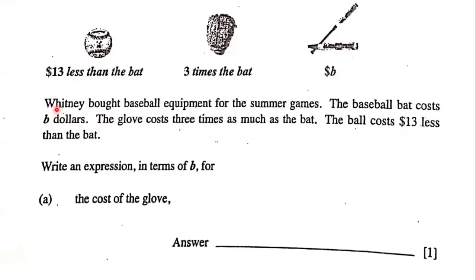The question states Whitney bought baseball equipment for the summer games. The baseball bat costs B dollars, the glove costs three times as much as the bat, and the ball costs $13 less than the bat. Write an expression in terms of B for the cost of the glove.